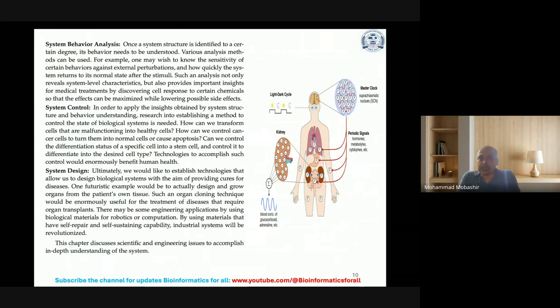System control means applying insights obtained by system structure and behavior understanding to establish methods to control the state of biological systems. System design means ultimately establishing technologies that allow us to design biological systems to provide cures for diseases. One futuristic example would be to actually design and grow organs from the patient's own tissue. Such organ cloning techniques would be enormously useful for diseases requiring organ transplants. There may be engineering applications using biomaterials for robotics or computations with self-repair and self-sustaining capability.